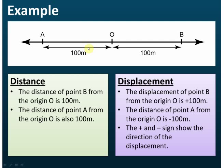Displacement is a vector quantity, so when you state displacement you must include the direction. For a straight line, you can use positive or negative to indicate direction — you don't need to specify degrees from north or south, because there are only two directions on a straight line. But you must always state whether it is positive or negative.